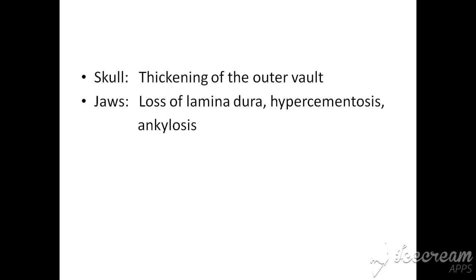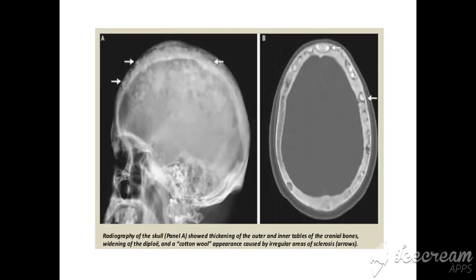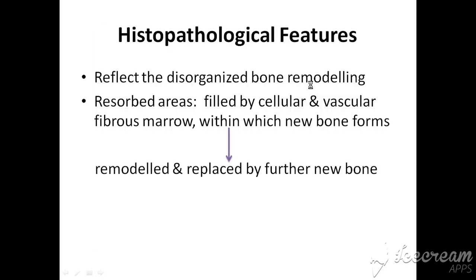Ankylosis is the direct attachment of the tooth with the bone. Normally there is a periodontal ligament, but in ankylosis there is no periodontal ligament. We can see in this image the vault of the skull. In a normal radiograph it is not that thick, but in Paget disease, as you can see in this sagittal section, the radiograph shows the vault is much more opaque and thick. This is the classical radiographic feature of Paget disease, shown in these vault radiographs.